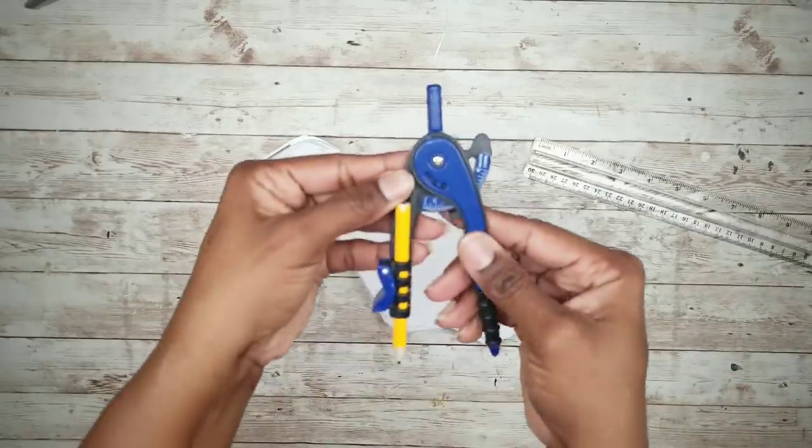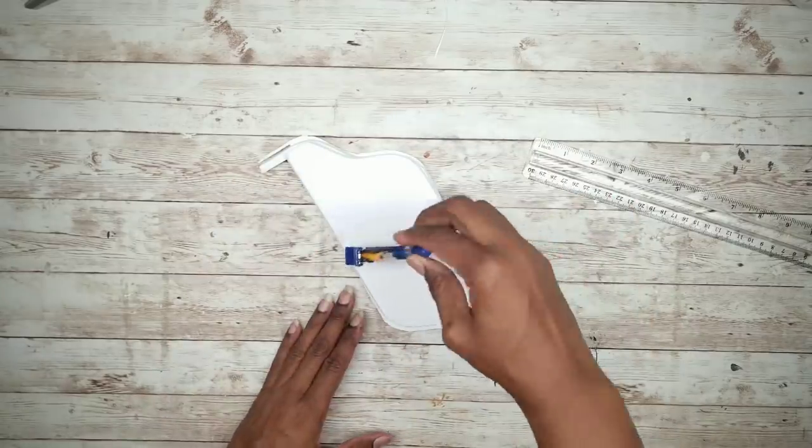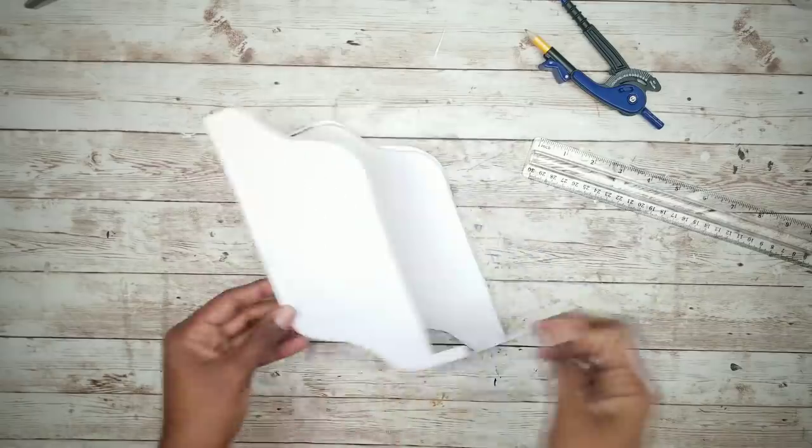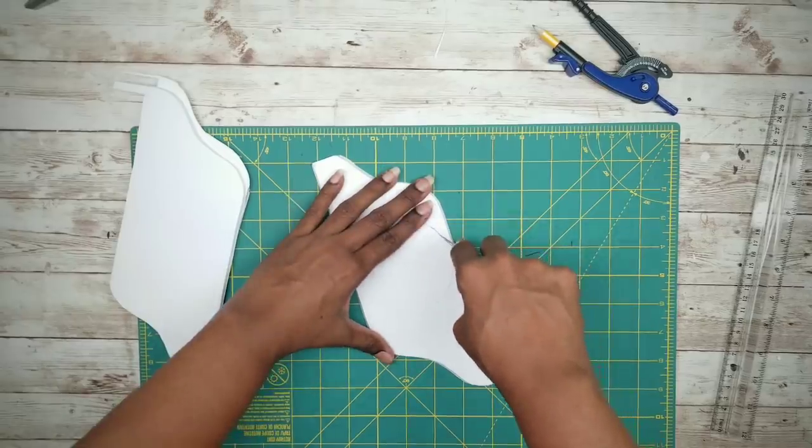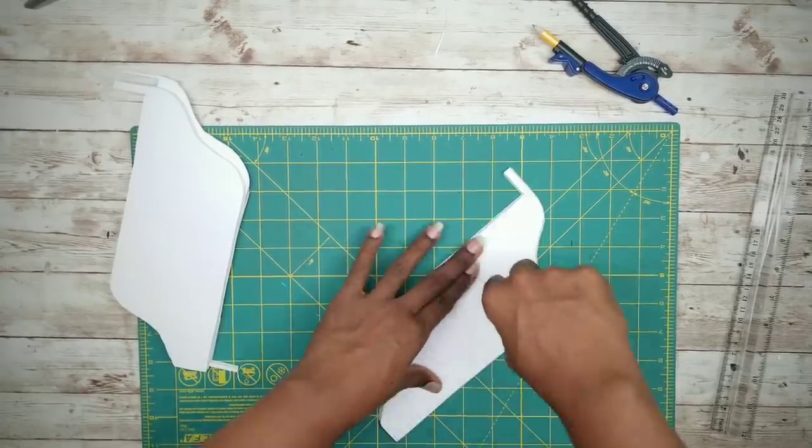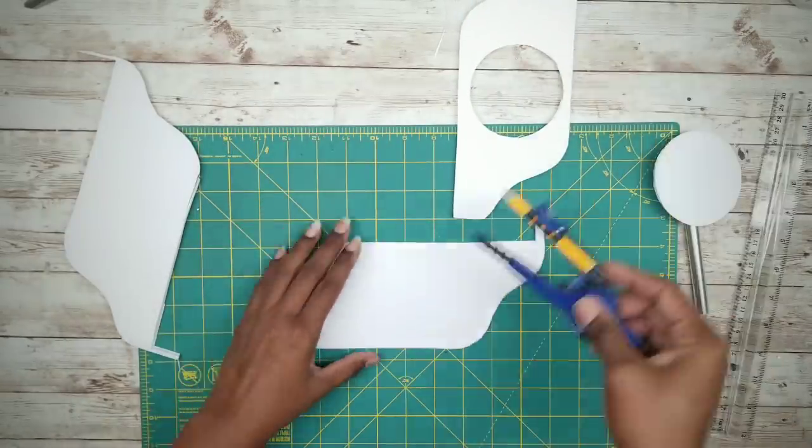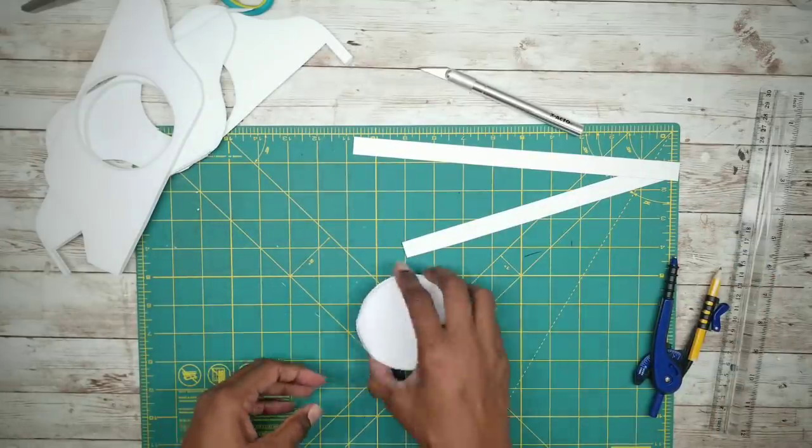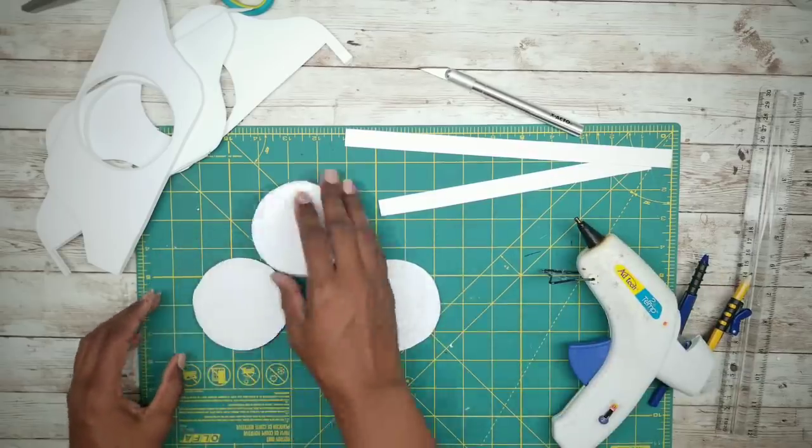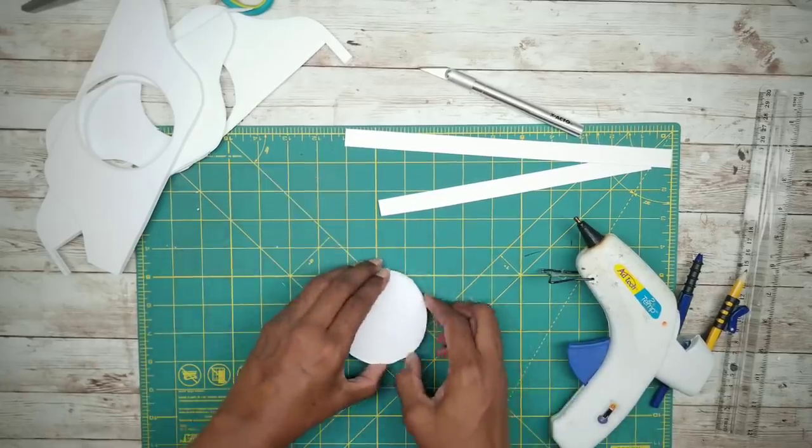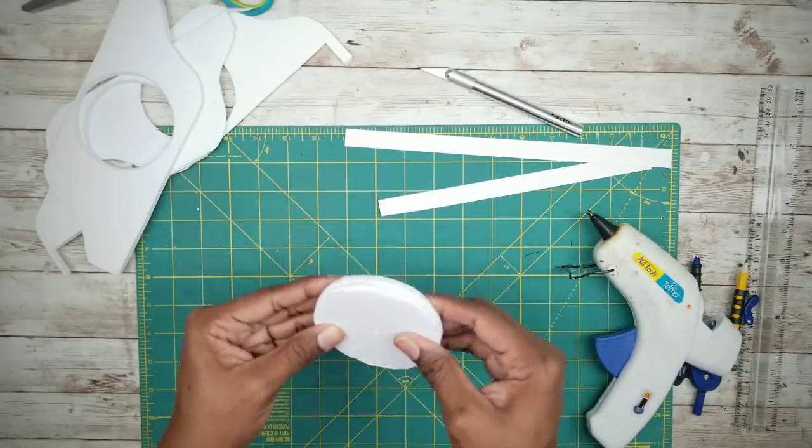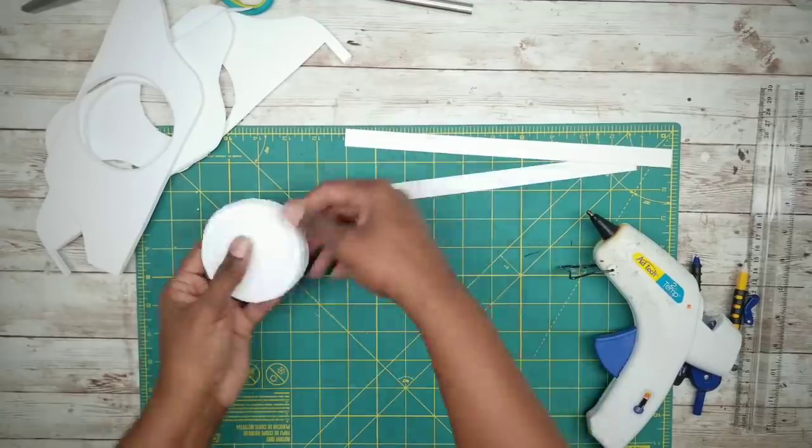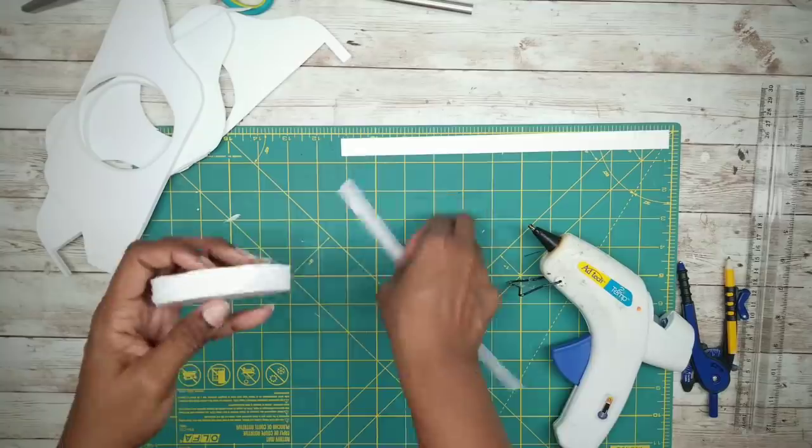We're going to cut out our circles. Grab three of those foam board scraps and a compass. We want to make circles about three and a half inches wide. Set your compass and draw your circle. I'm going to cut those out with the exacto knife. We need two more circles. Now we have our three circles and we're going to hot glue those together. Then trim the edges to make them even. When they're even, apply that cardstock strip along the raw edge, just like we did with our arches.